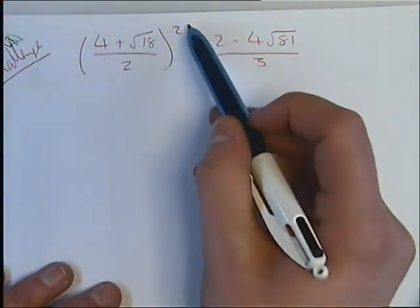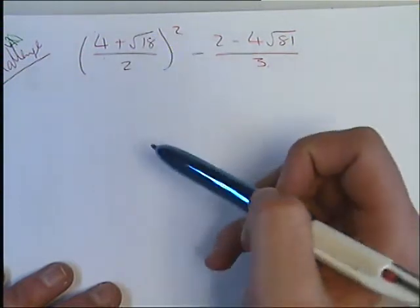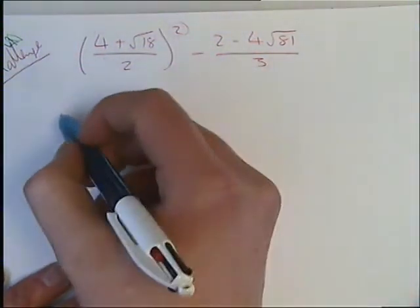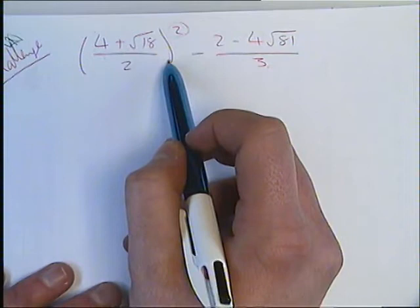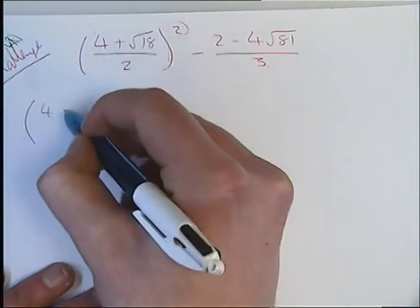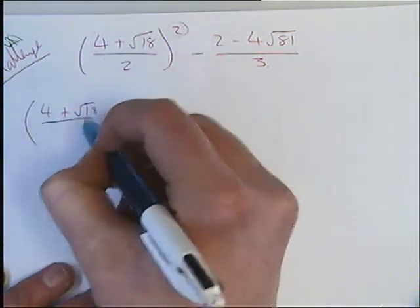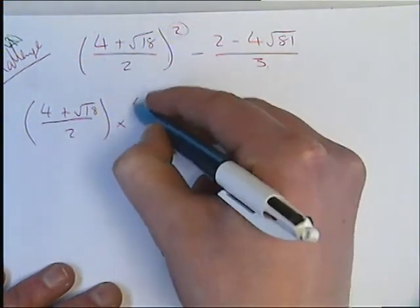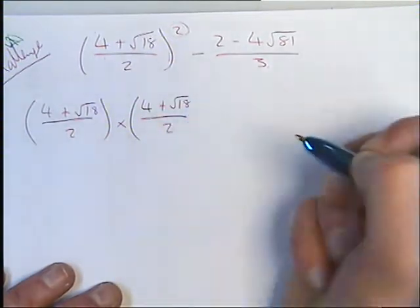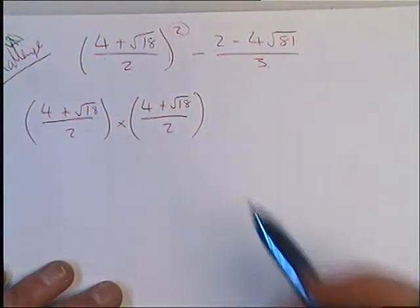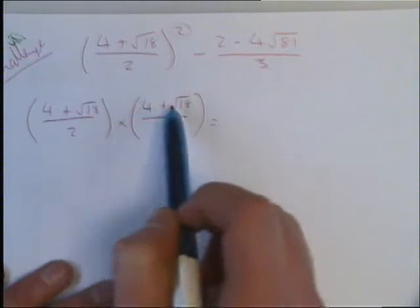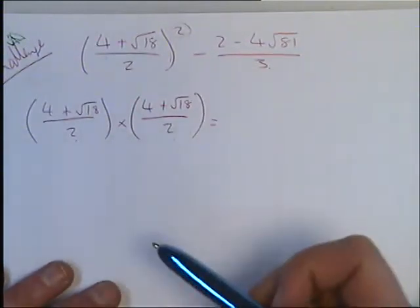So looking at our first bracket, dealing with our indices and our bracket first, we should know that when we see a squared, what that means is this bracket times by itself. So if we rewrite that out, it's going to look like 4 plus root 18 over 2 multiplied by 4 plus root 18 over 2. We're going to times this fraction by this fraction. And when we're multiplying fractions, we need to do the top times the top and the bottom times the bottom.